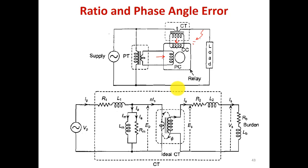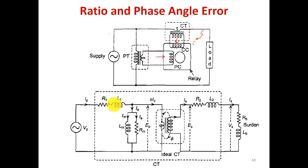Now we will see the equivalent circuit of the current transformer. You can see here it exactly matches with the equivalent circuit of a transformer. Because the CT is a current transformer, it reduces the high current flowing in the transmission network to a smaller value and feeds it to the relay circuit. The equivalent circuit is exactly like a transformer, but there are certain assumptions after which the equivalent circuit will be modified.